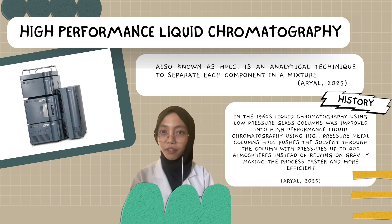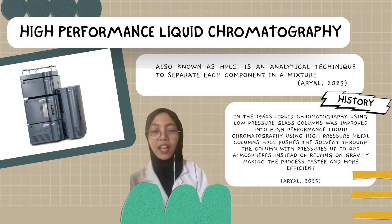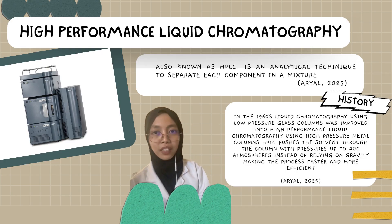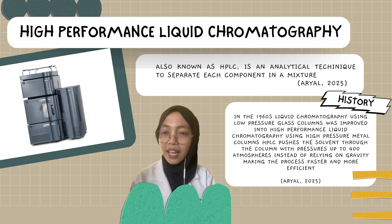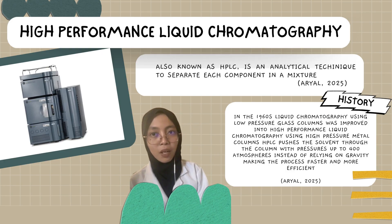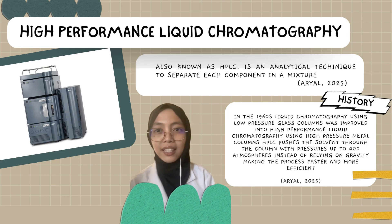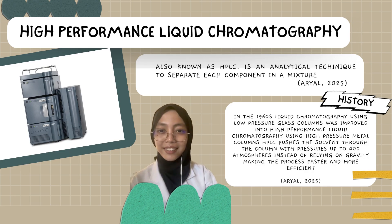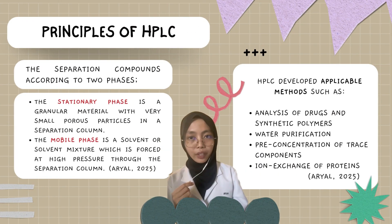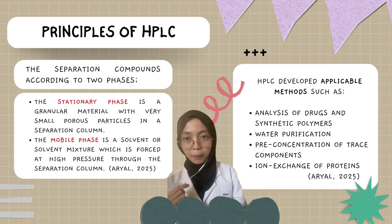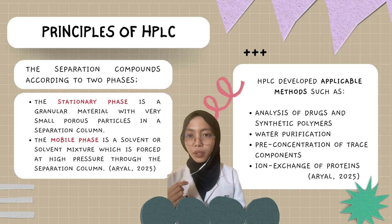In the 1960s, liquid chromatography used low-pressure glass columns and relied on gravity. This changed with the development of high-performance liquid chromatography, HPLC, which used high-pressure metal columns pushing the solvent through at up to 400 atm, making the process much faster and more efficient. HPLC relies on two components to separate substances: the stationary phase, which stays fixed in place, and the mobile phase, a liquid solvent that flows through the column under high pressure carrying the sample with it.